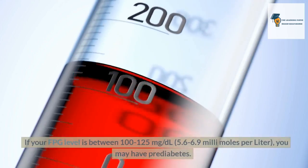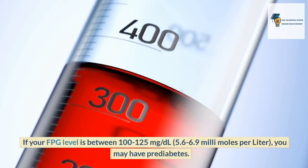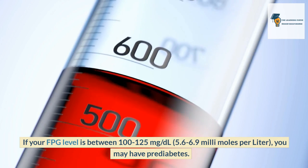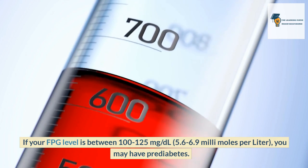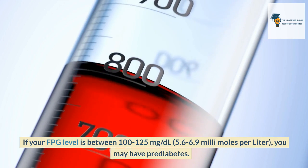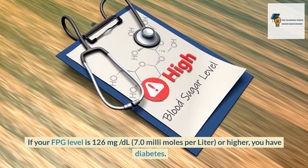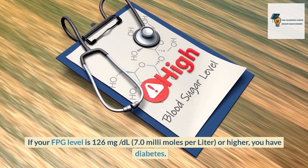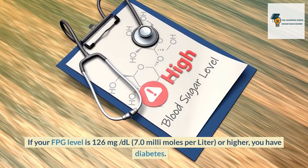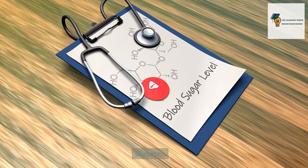If your FPG level is between 100–125 mg/dL (5.6–6.9 mmol/L), you may have prediabetes. If your FPG level is 126 mg/dL (7.0 mmol/L) or higher, you have diabetes.